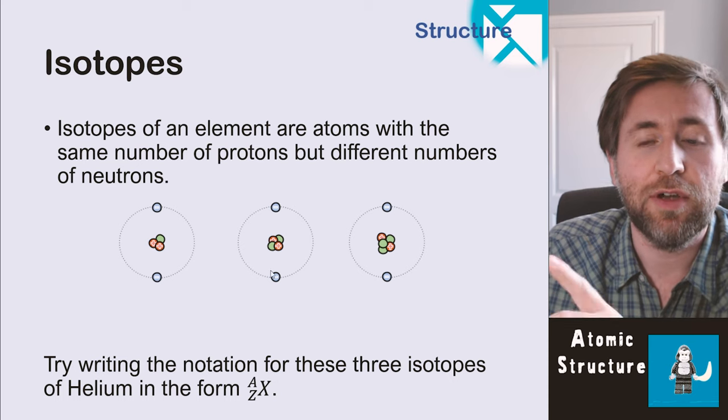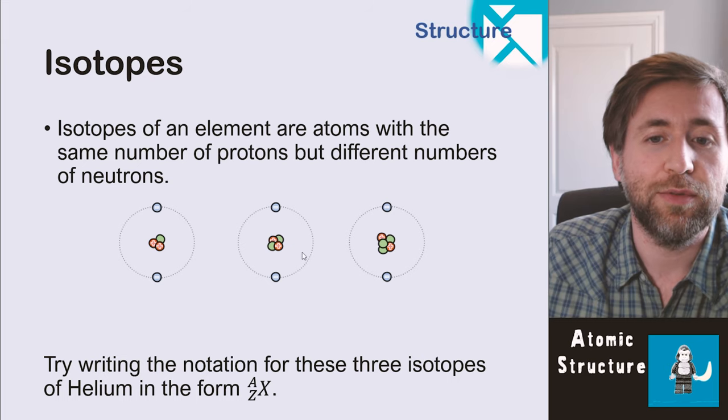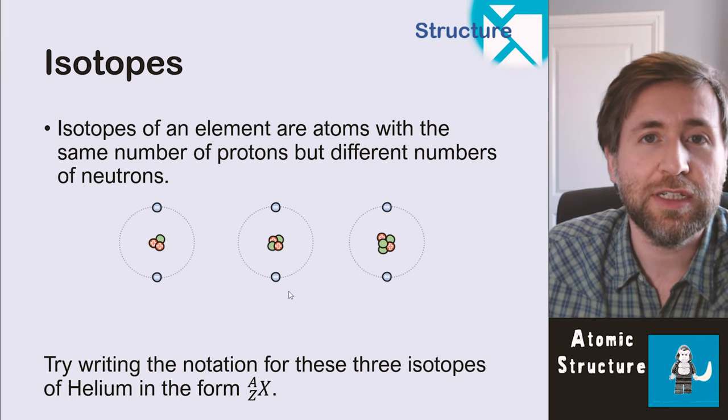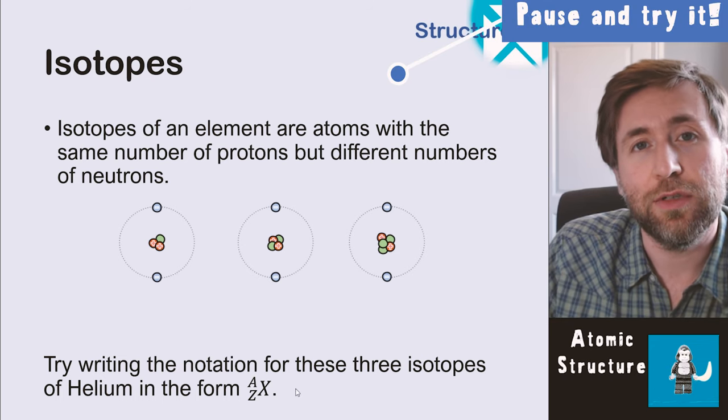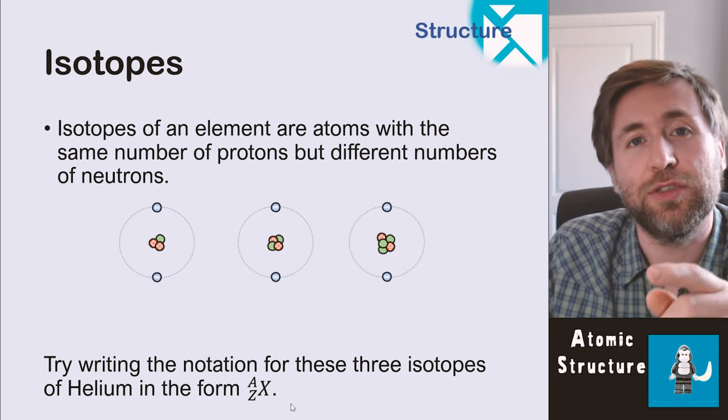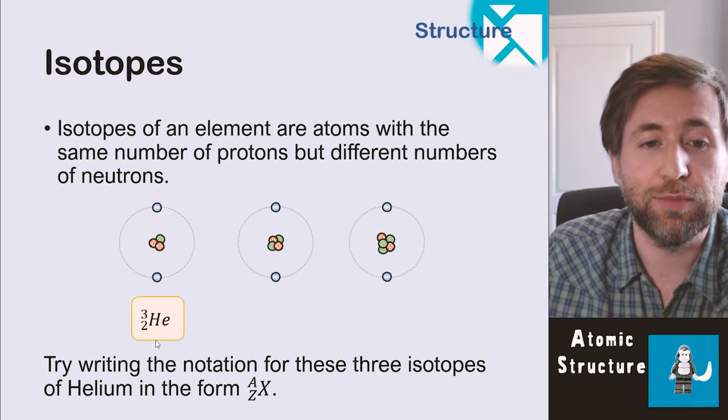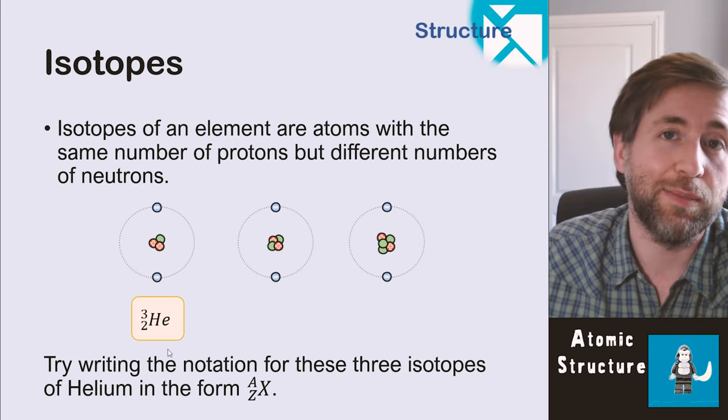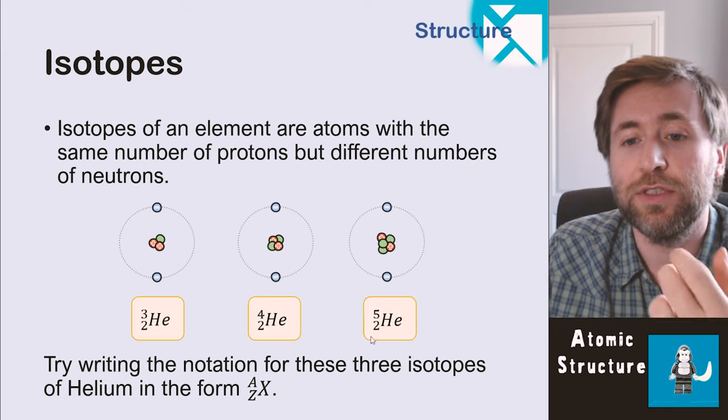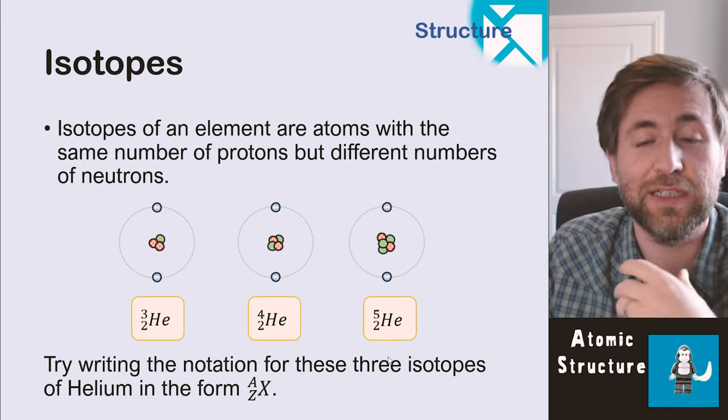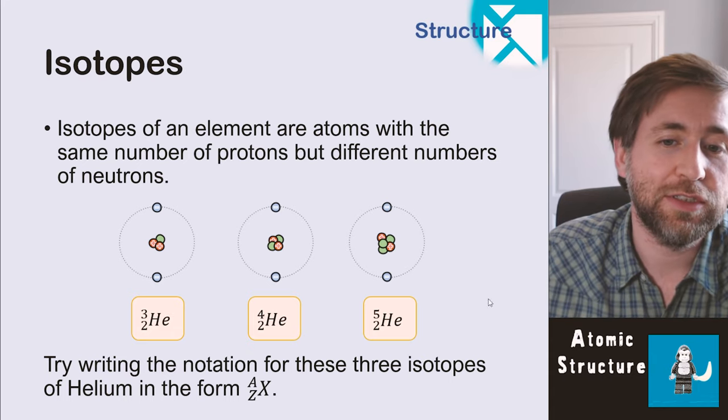So I have three different isotopes of helium, and we're going to express them in this form, in this notation. I already had the previous one on the previous slide, helium-4. What about helium-3 and helium-5? Pause and see if you can do the notation in this form to show the makeup of these three helium isotopes. So this is helium-3, two protons and one neutron, meaning a mass number of three. This is helium-4, two protons and two neutrons, and this is helium-5, two protons and three neutrons, so a mass of five. We're not interested in electrons at this point. This is just describing the nucleus.